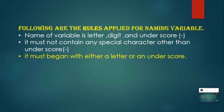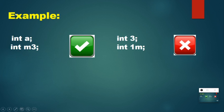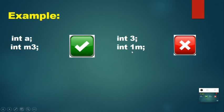Coming to the next rule: the variable name should begin with either a letter or an underscore. For example, 'int a' — the starting character is a letter, so it will be accepted. But 'int 3' will not be accepted because it starts with a number. It will accept either a letter or underscore at the start, but not a number. For example, 'int m3' will be accepted, but 'int 1m' will not be accepted because 1 is the starting character, and if it is a number, the compiler will not accept it.